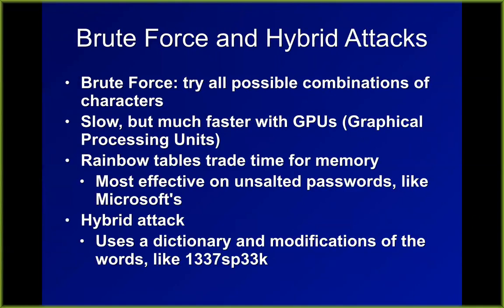A brute force attack is where you try all possible combinations of characters — slow, but can be sped up using graphical processing units. In the days of LM hashes it was practical to use rainbow tables. The number of combinations was so small you could store a list of pre-calculated hashes in RAM and use lookup processes instead of calculating. That's why there were hash-cracking tools from L0pht Heavy Industries — one called L0phtCrack — that could try all possible LM hashes in just a few minutes.